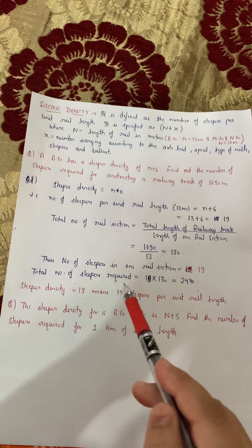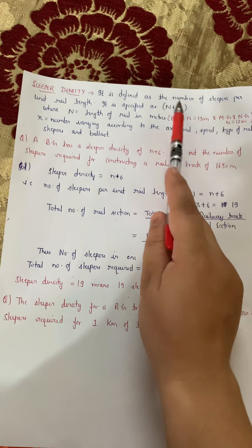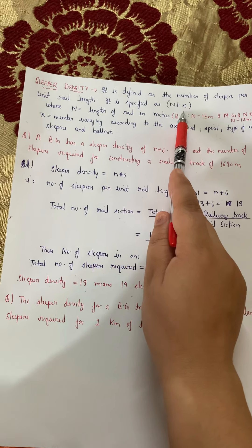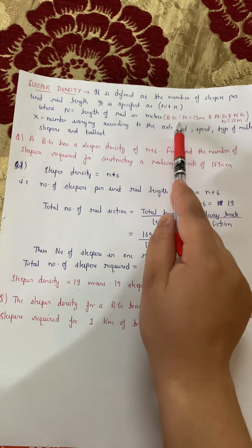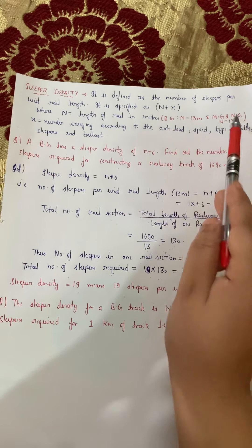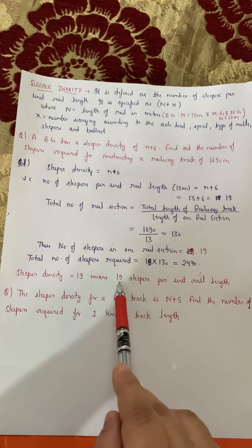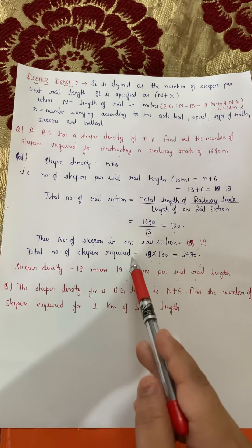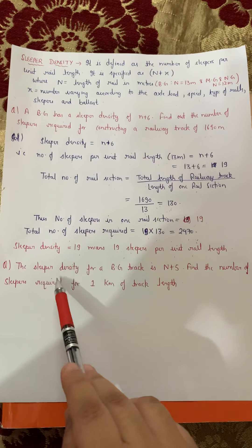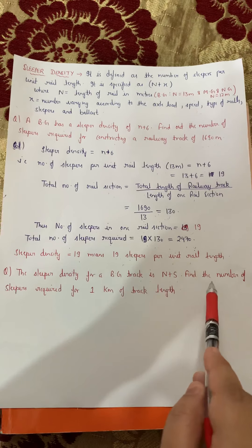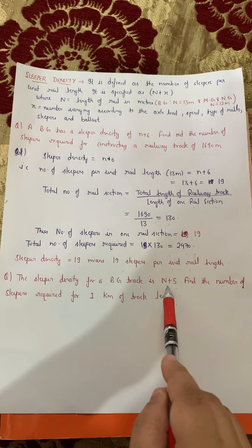Ab humare total number of rail sections us railway track mein kitnay hain? Ek rail section mein humare 19 sleepers hain — lekin us pure railway track mein kitnay rail sections hain jinko hum ne join karke pura railway track banaya hai, woh calculate karenge. Total rail length divide by length of one rail section — 1690 divided by 13 equals to 130. Means 130 rail sections ko join karke humne total 1690 meters ka railway track construct ki hai.